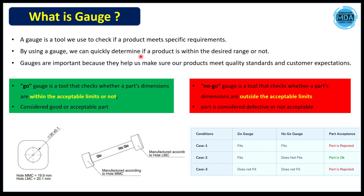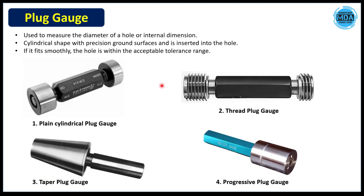By using the gauge, we can quickly determine if the product is within the design range or not. Gauges are important because they help us make sure our products meet quality standards and customer expectations. We use gauges to verify the dimensions of a product after manufacturing — it is a quality tool.